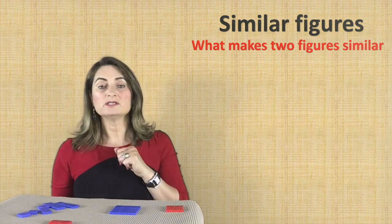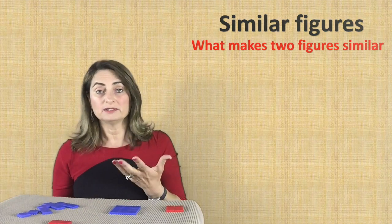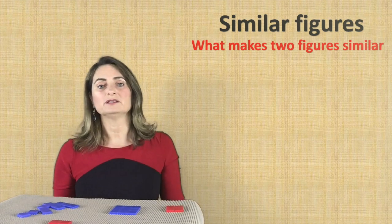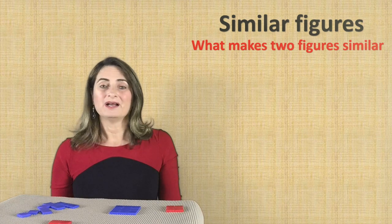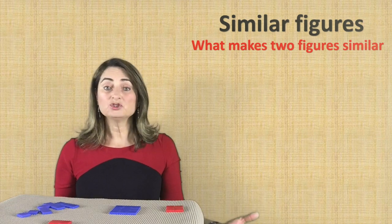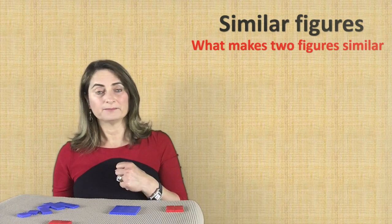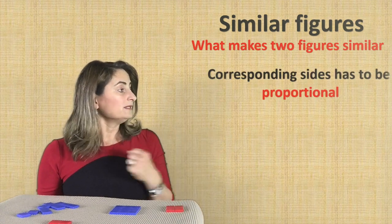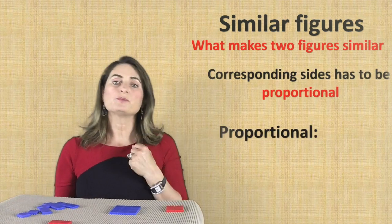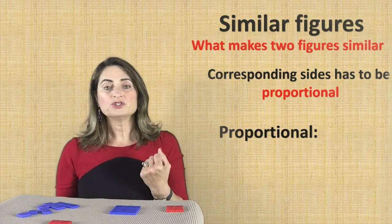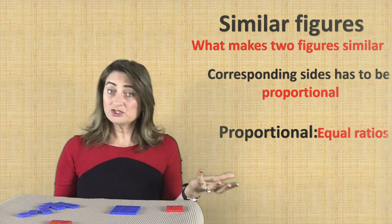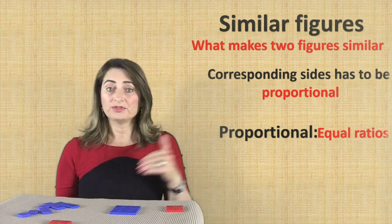The red square and the blue squares are similar because they have the same shape, not necessarily the same size. But how can you mathematically make sure that they are similar? Corresponding sides have to be proportional. Proportional means equal ratio, and ratio means comparing two things.